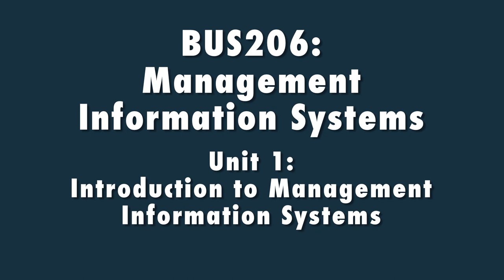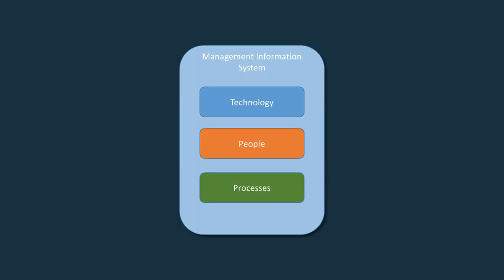It's a common misconception — most people believe that information systems include all of the technologies that compose a network. However, technology is only one small part of what an information system really is. All components of an MIS play a major role in an organization. Technology, people, and process are the three high-level components that make up a management information system.